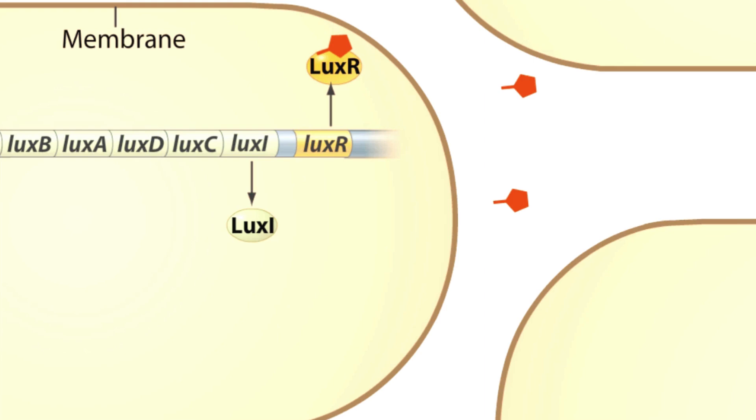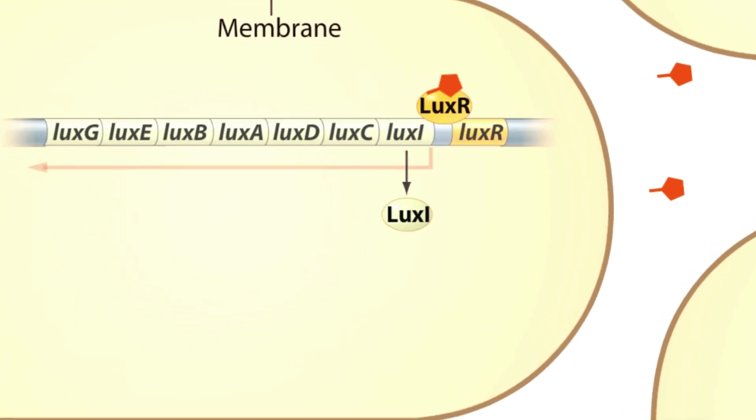The LuxR-autoinducer complex binds to the operon and activates transcription, enhancing the expression of the target genes. Thus, more LuxI and more autoinducer are produced, which will ultimately further enhance the expression of this operon. The enzyme responsible for light production, luciferase, consists of the products of the LuxA and LuxB genes, which are also produced.